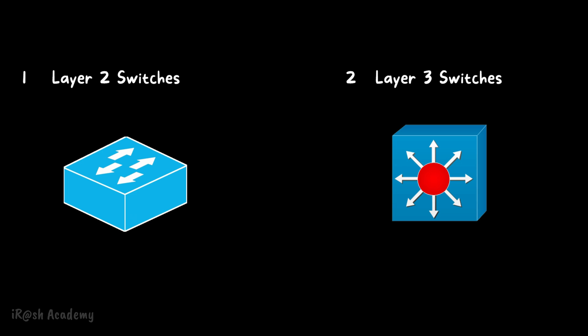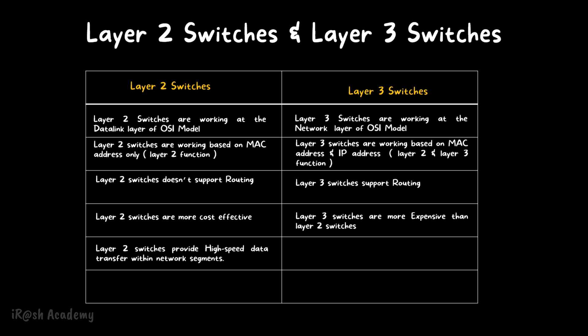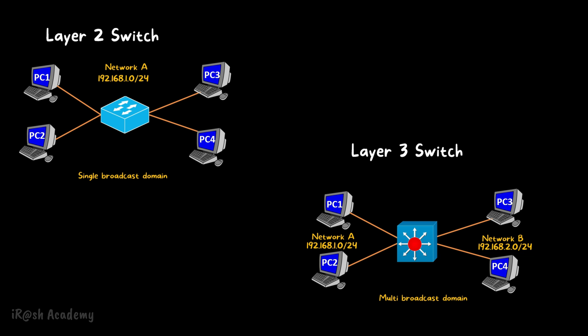Point number five: layer 2 switches provide high speed data transfer within the network segments, but layer 3 switches provide high speed data transfer between different network segments. Switches are hardware-based devices and can transfer data at wire speed. Layer 2 switches have a single broadcast domain and transfer data in wire speed inside that single network, while layer 3 switches support multiple network segments and transfer data between multiple networks at wire speed.